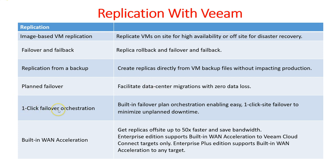There is also a one-click failover orchestrator for planned failover, enabling easy one-click failover to minimize unplanned downtime. Veeam also has built-in WAN acceleration, which can make off-site replication up to 50 times faster and save bandwidth. Veeam automatically compresses your data and applies deduplication, saving bandwidth and making backup and replication faster. WAN acceleration is supported in Enterprise Edition for Veeam Cloud Connect targets, and Enterprise Plus Edition supports broader targets.